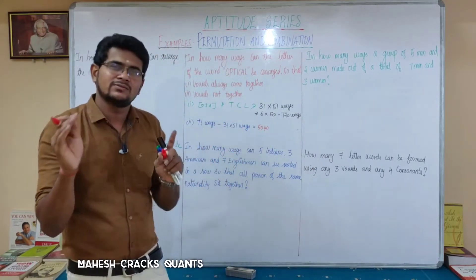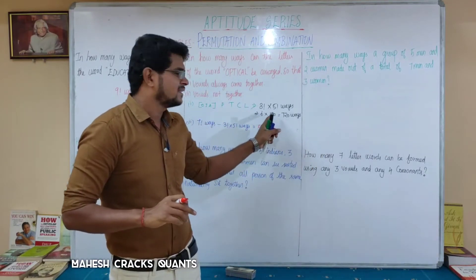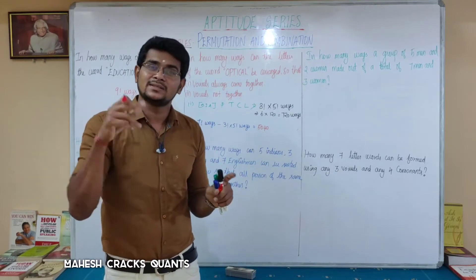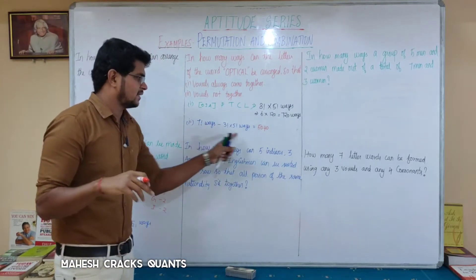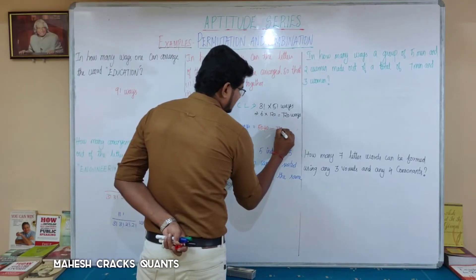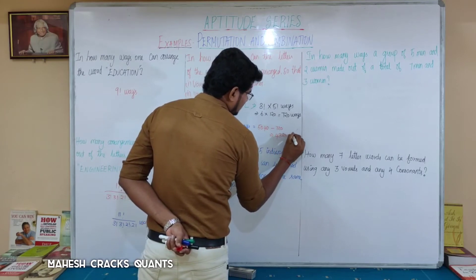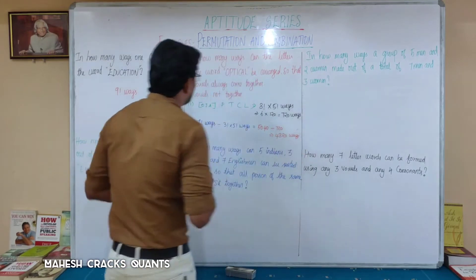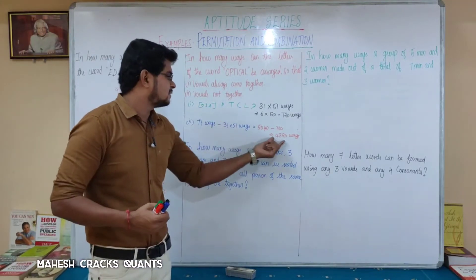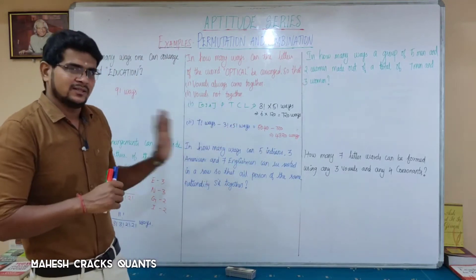7-factorial = 7 × 6 × 5 × 4 × 3 × 2 × 1 = 5,040. So second answer: 5,040 minus 720 = 4,320 ways. That's it.